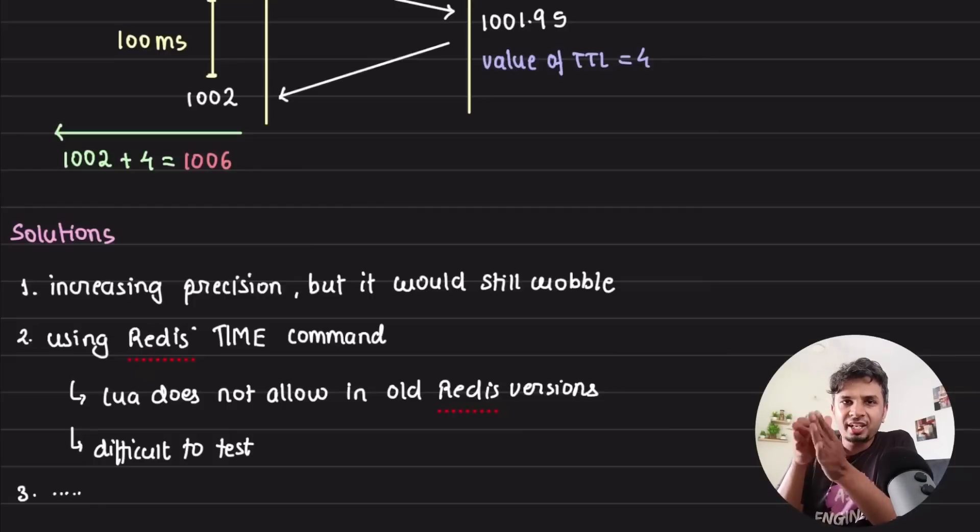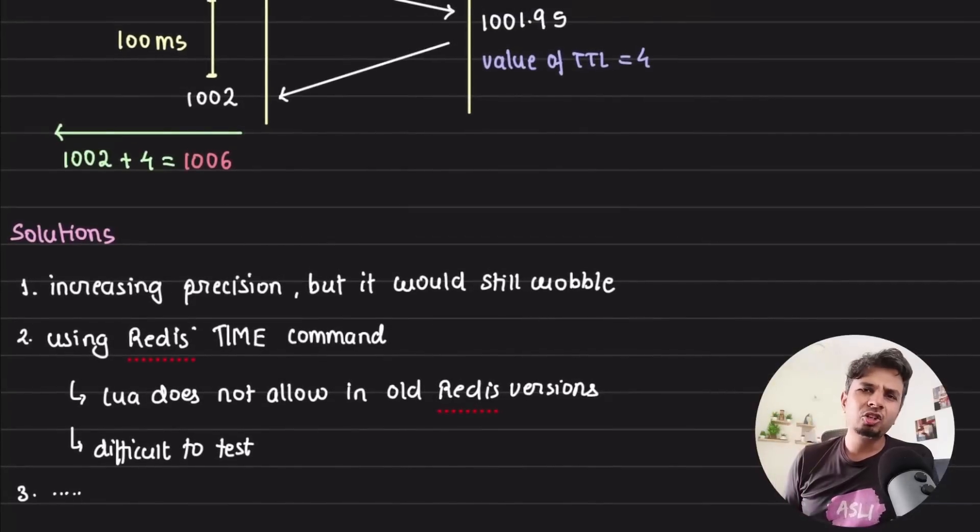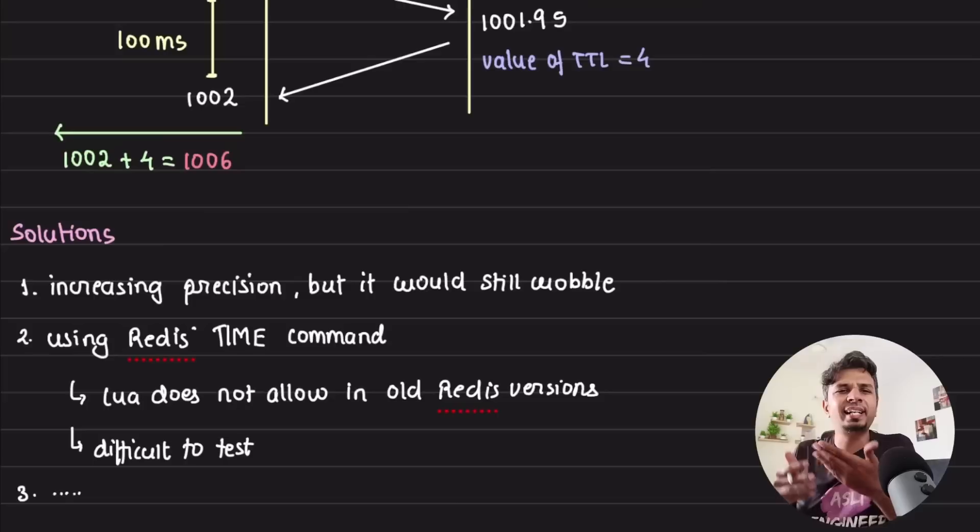Now we understand why wobbling would happen, and now we can see n number of cases where this wobble would happen. It's not just one-off case, n number of cases where this wobble would happen when you are breaching that time. That time part is when the wobble would happen. So one potential solution that you might think of is, hey, let me increase the precision. So instead of operating at the seconds level, let's say we do it at the millisecond level. But that would still not—that would minimize the wobble, but it would still not eradicate it. Another thing is you'd say, hey, instead of me computing the time at the API server, the final time.now plus TTL, what if my Redis itself sends it? That would make sense if we do that. That was difficult to test for them, and more importantly, did not support versions 5 and below, which some of their infrastructure components did have.